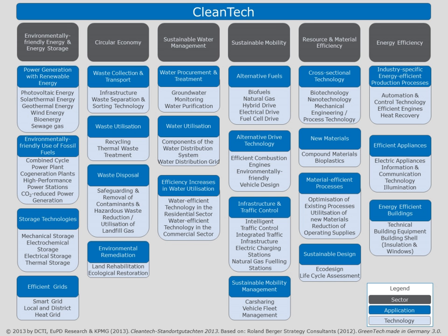The term is also used to describe sustainable energy generation technologies such as photovoltaics, wind turbines, bioreactors, etc. Sustainable development is the core of environmental technologies. The term environmental technologies is also used to describe a class of electronic devices that can promote sustainable management of resources.